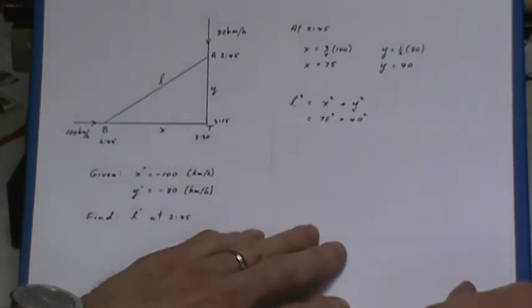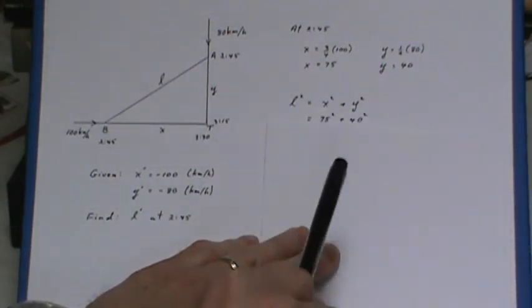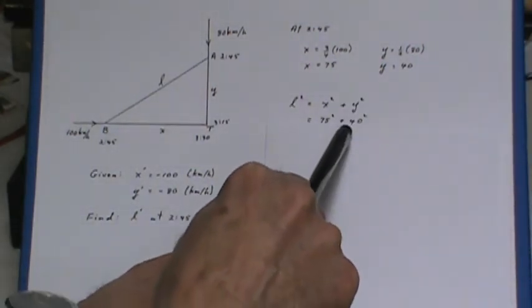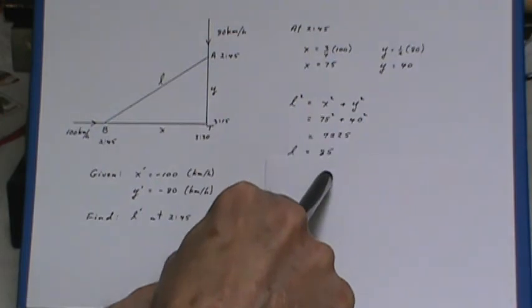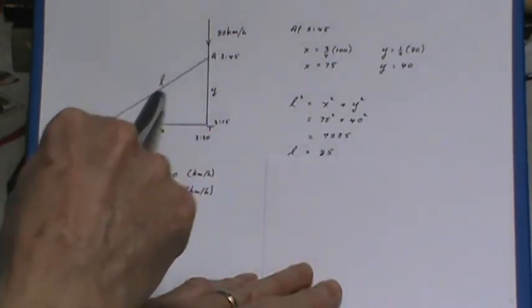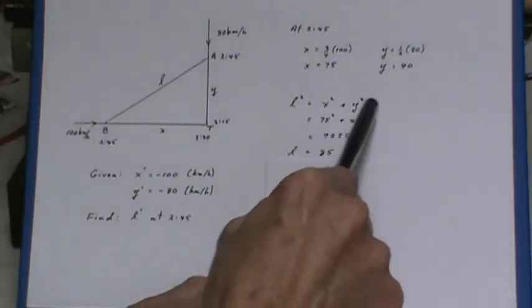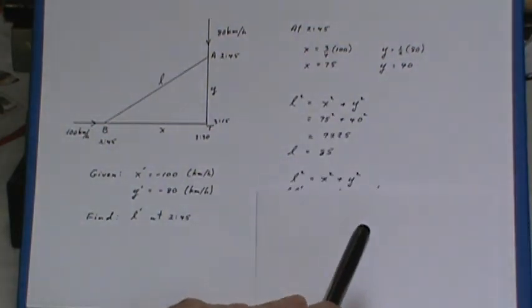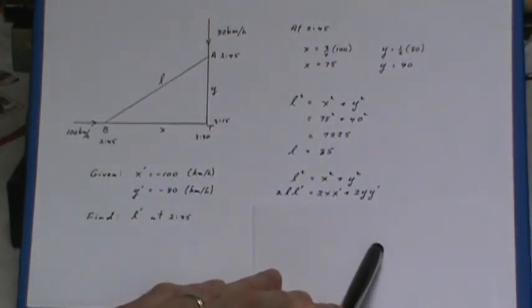So I set up Pythagorean Theorem, put in the x and y values. This is simply to figure out the l value along here. Then we go back to this equation again. That's where the calculus starts: 2l·l' = 2x·x' + 2y·y', implicit differentiation with respect to time.